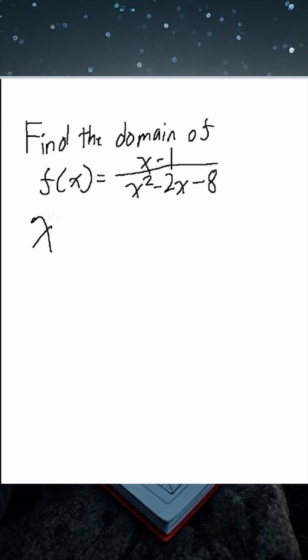So we'll have x squared minus 2x minus 8 does not equal 0. Because when it is equal to 0, it's going to be undefined. So let's begin factoring this.